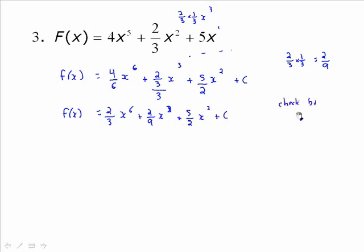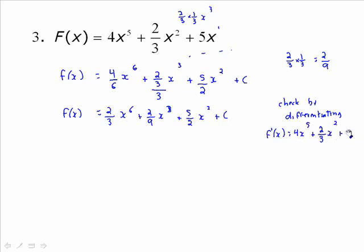The check is useful — take the derivative of your answer and it has to take you right back to where you started. So we would get two-thirds times 6, which is 12 over 3, which is just 4. Go down by one exponent: 4x to the 5. Same thing here: two-ninths times 3 is 6 over 9, which reduces to 2 over 3 x squared. And the last one: 5 times 2 is 10 over 2, so that's 5x. We did it. Check where necessary — for simple problems you probably won't feel you have to, but if you have any doubts, do so.